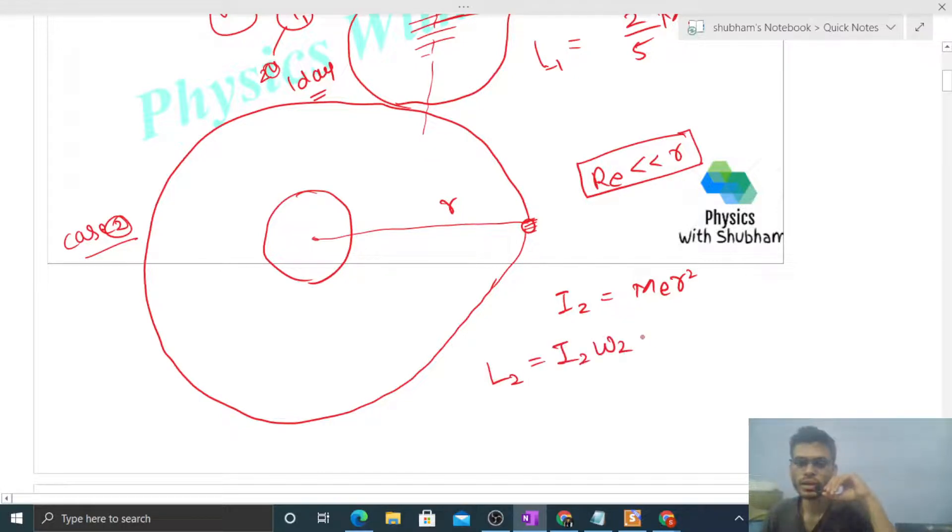And here, the angular momentum will be L2, that will be I2 into omega 2. Now how do we write omega 2? Omega 2 will be 2π upon time taken by Earth to complete one total revolution. How many days? 365 days. So we take T2, where T2 value is 365 days. So I2 value will be Me into R square.